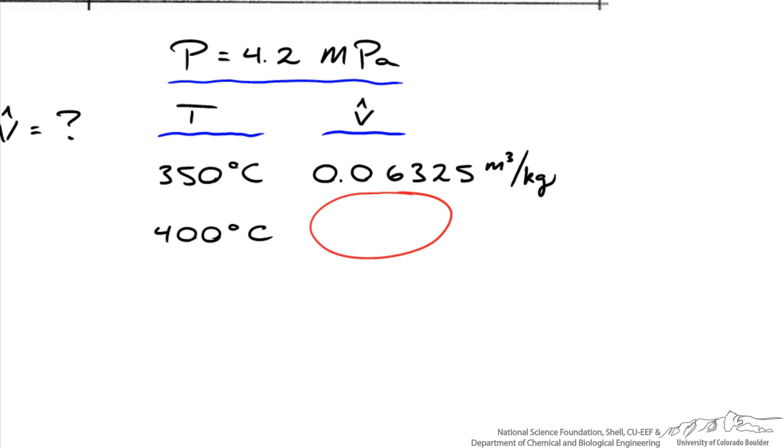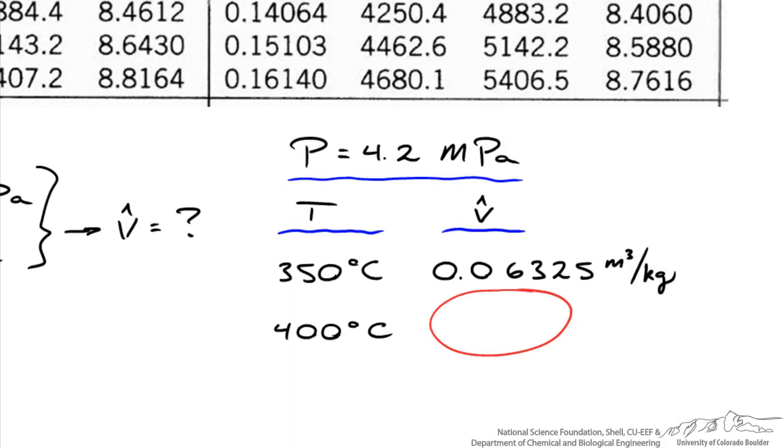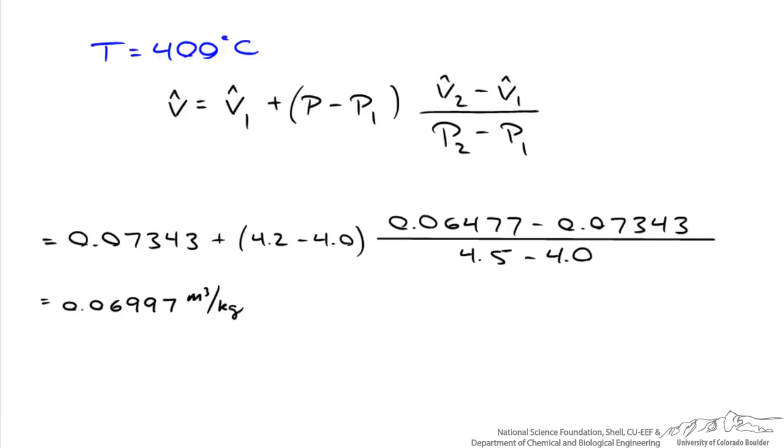And we'll need to do it again at a temperature of 400 degrees C. So the numbers we need at 400 degrees C are right below 350. So let's work with these numbers now for the interpolation. And running the same calculations, what I come up with for the specific volume at 400 degrees C is a value of 0.06997. Here are the details of that calculation if you want to see them.